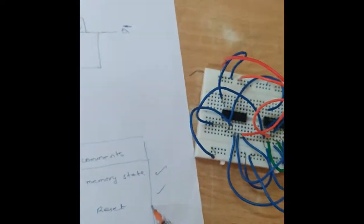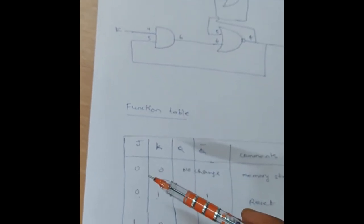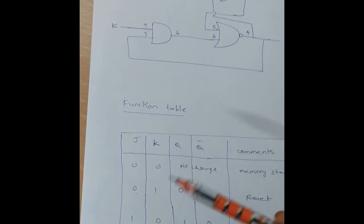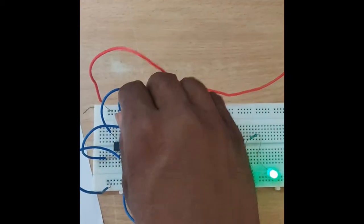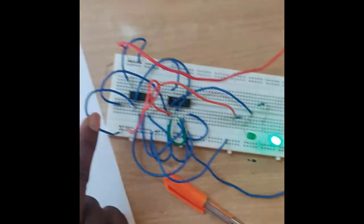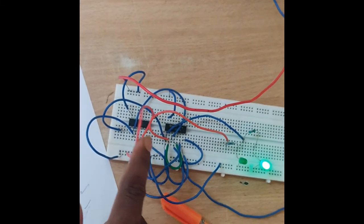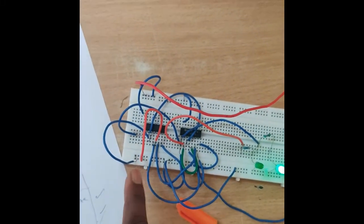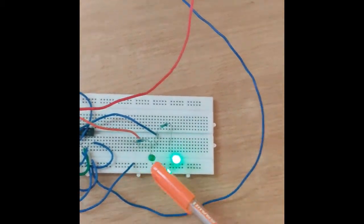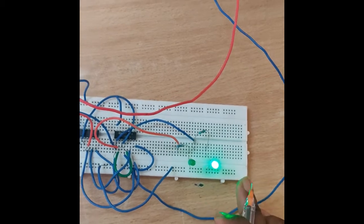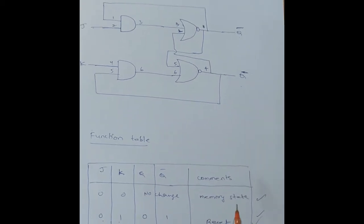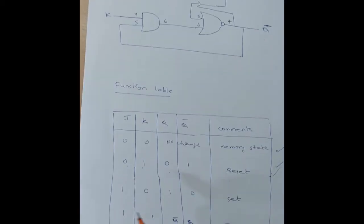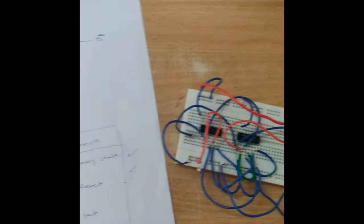Next, we check the 00 combination to verify the memory state — whether the previous output is retained. Both J and K are given 0. The previous output was 01, and now the output is still 01. That is why the 00 combination is known as the memory state.